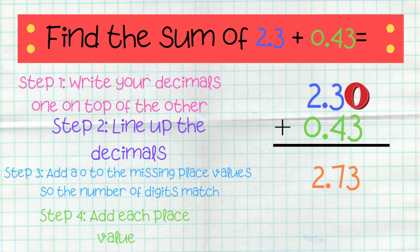Three-tenths plus four-tenths is seven-tenths. And two wholes plus zero wholes is two wholes. So, the answer is 2.73.